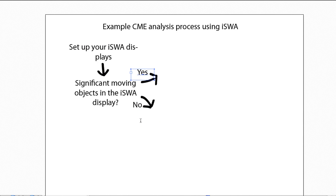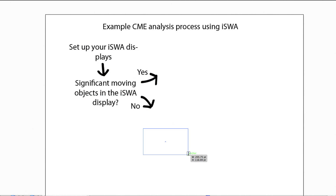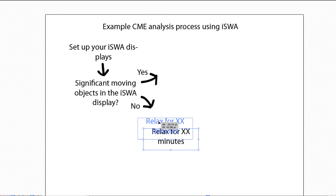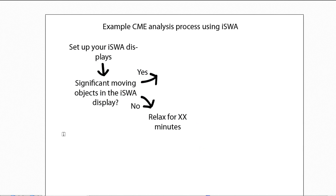Let's discuss the no branch first. You have your displays up, you did not detect any significant moving objects, which leads you to the no branch. The next step is that you can sit back and relax for XX minutes. The XX is determined by the need for timeliness of CME detection and by the temporal cadence of all the displays you set up. The coronagraph imagery used later had typical cadences varying from 15 to 30 minutes, so for these applications XX would be in the range of 15 to 30 minutes.